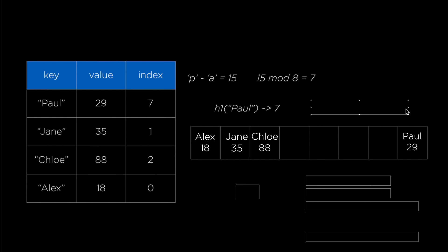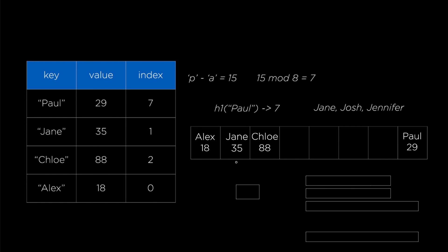If you consider English names, there might be a lot of names that start with 'j'. If you put Josh in this hash table, it would try to go into the same bucket as Jane, and the same thing with Jennifer. That would be called a collision — when multiple keys try to go into the same spot of the array. There is a way to deal with collisions and we're going to talk about those, but for now you should know that we want to avoid collisions as much as possible to keep your hash table efficient.